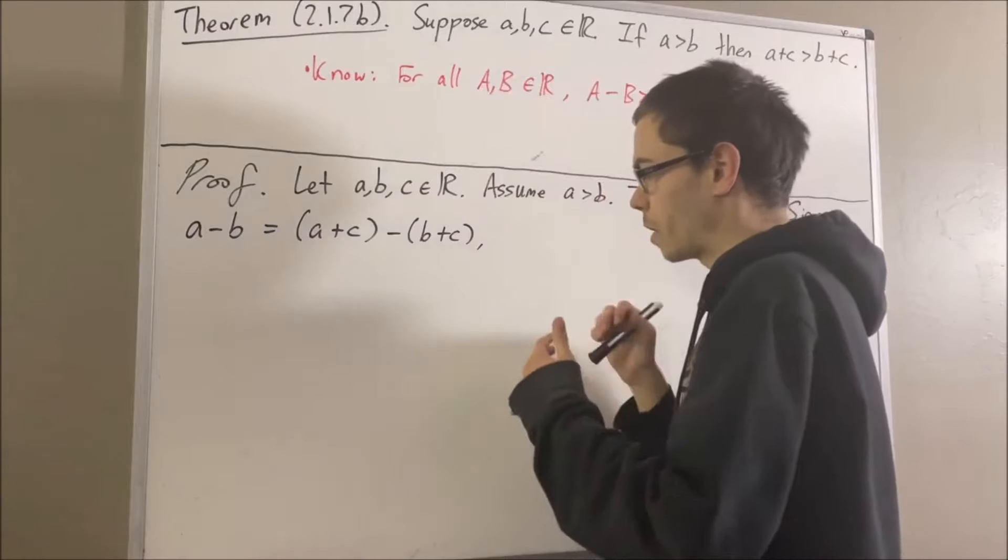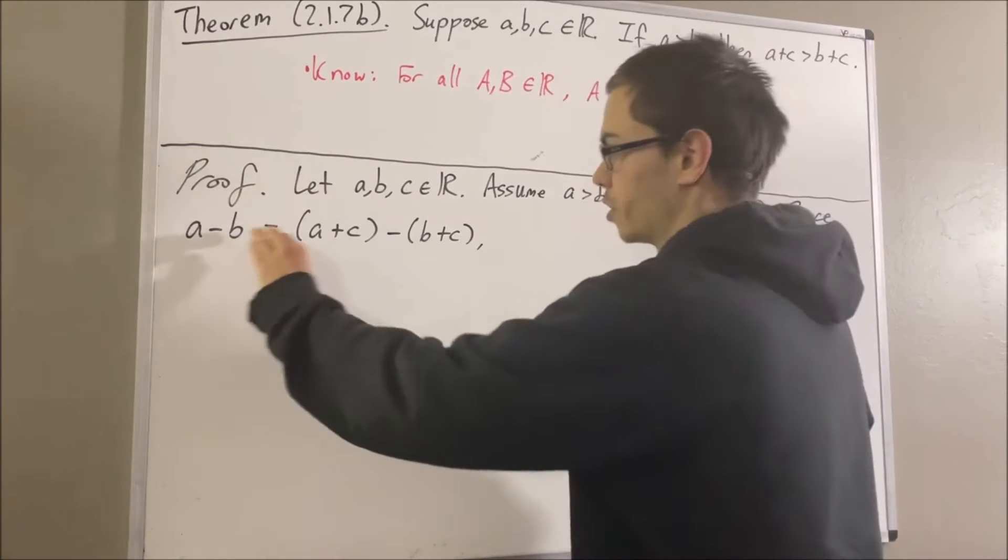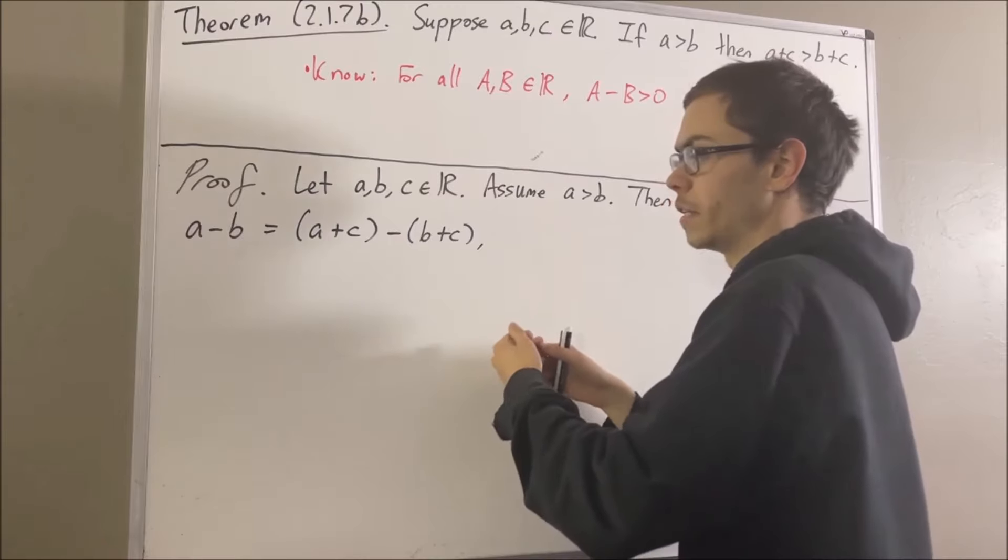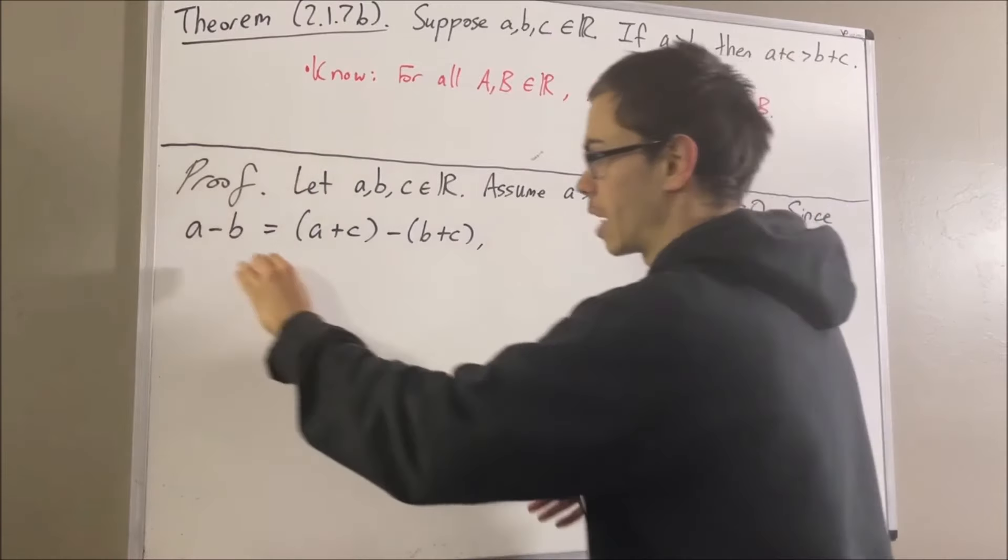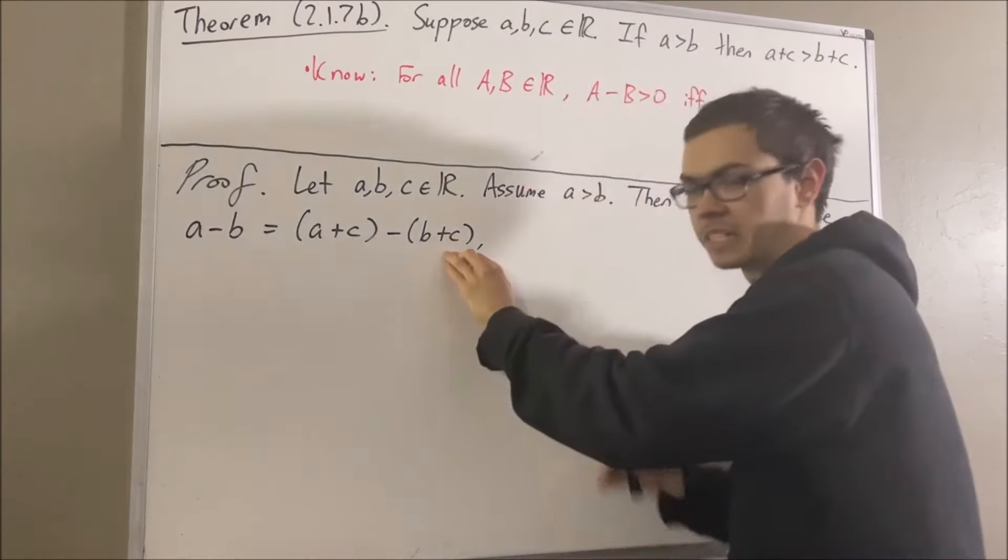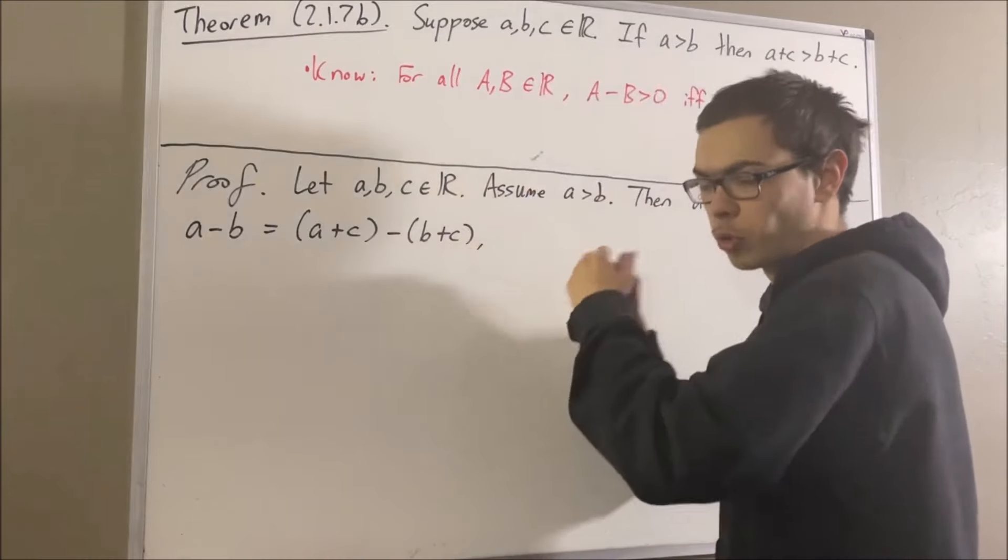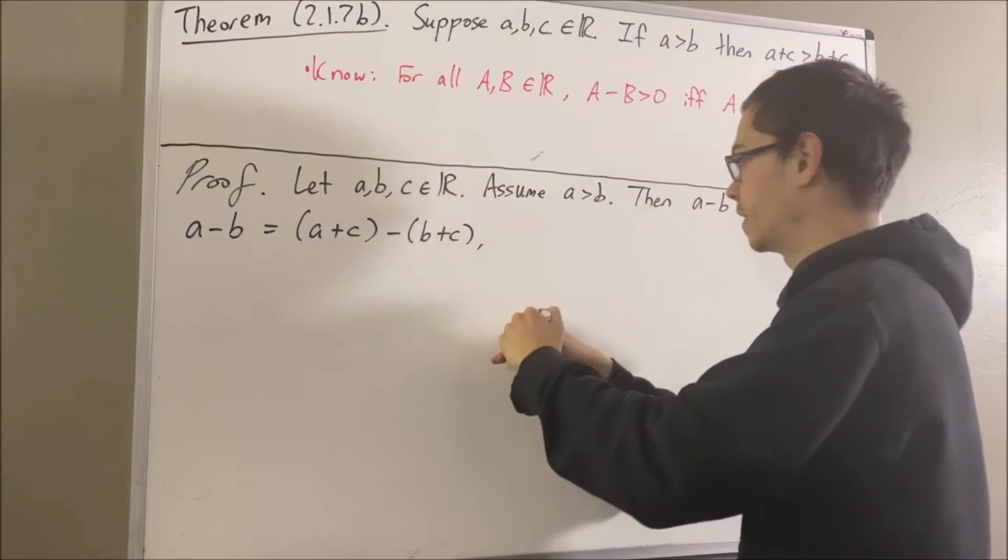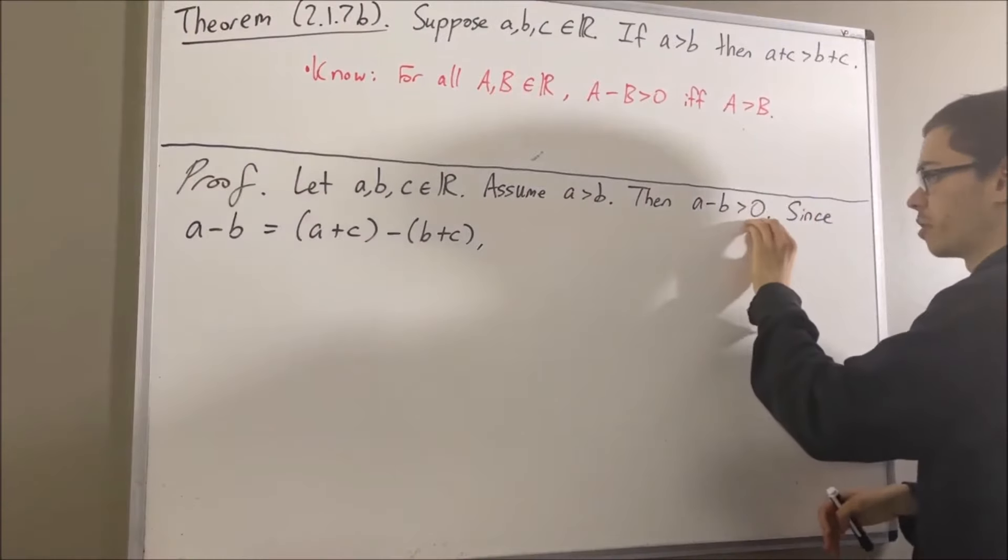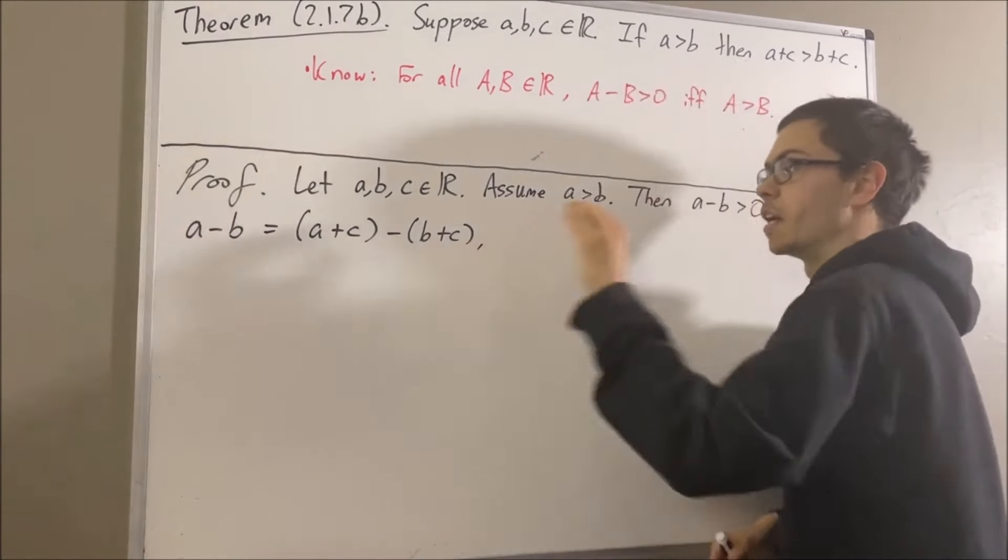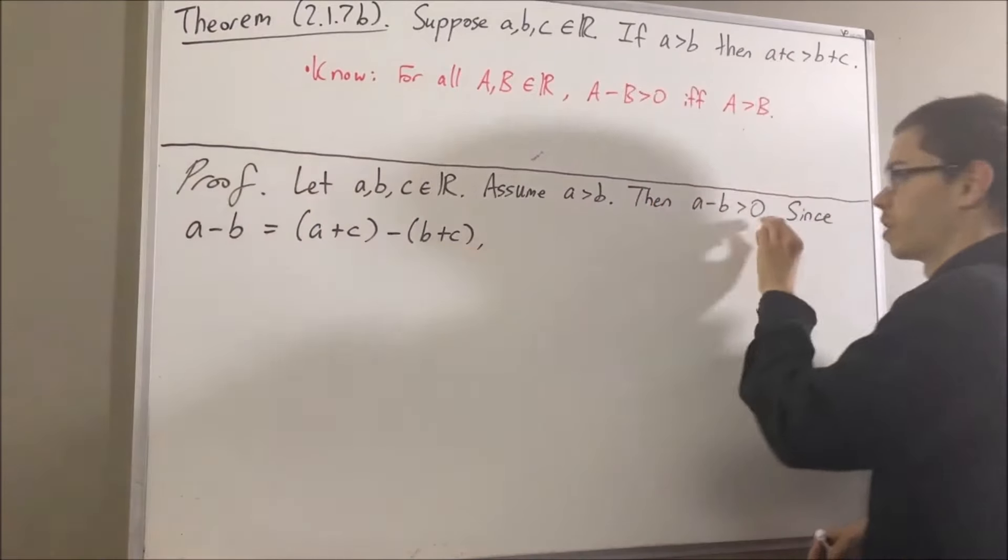You can verify through high school algebra that these two are equal, or you can use the field properties of the real numbers to establish that these two are in fact equal. But that's not the point here. What we see from this is that since A minus B is greater than zero, and A minus B is equal to this, it follows that this is greater than zero.